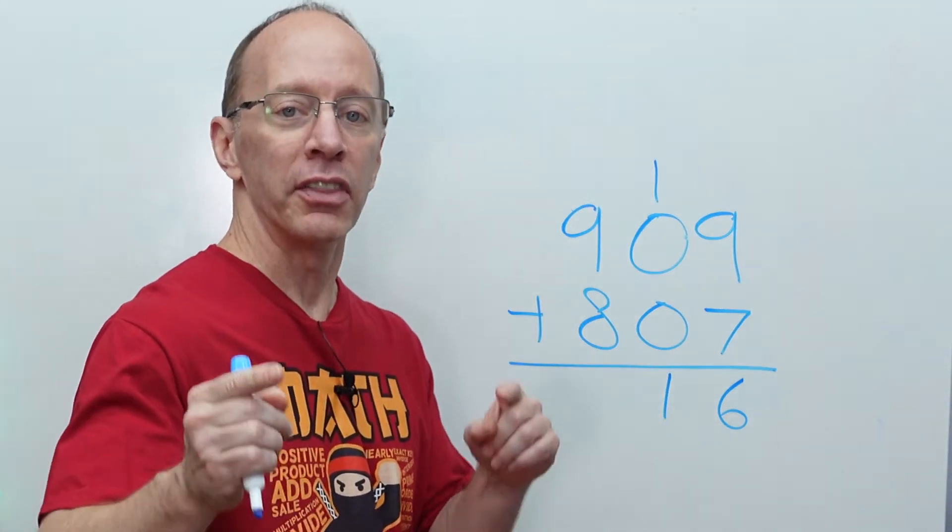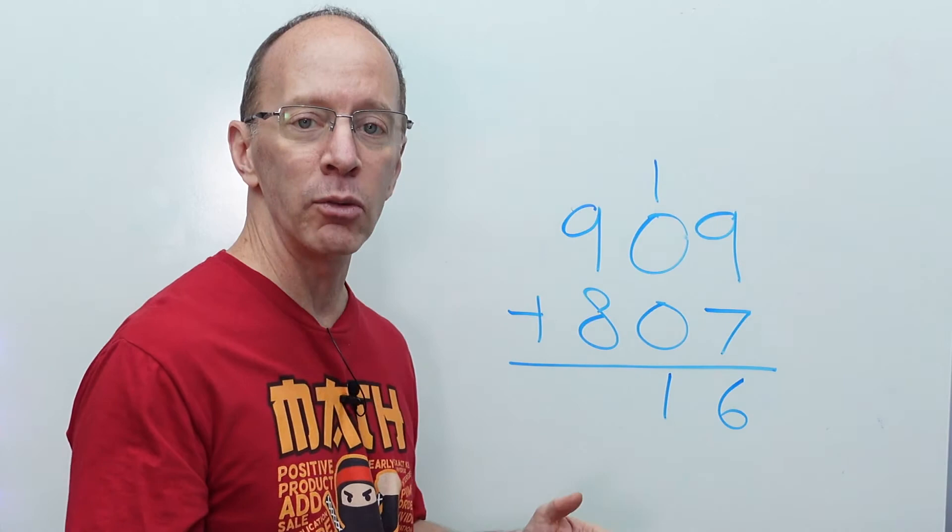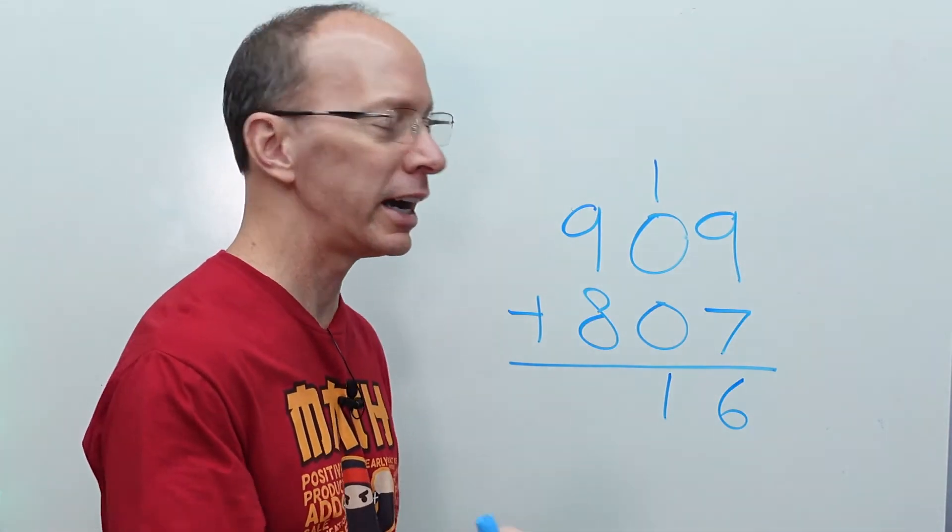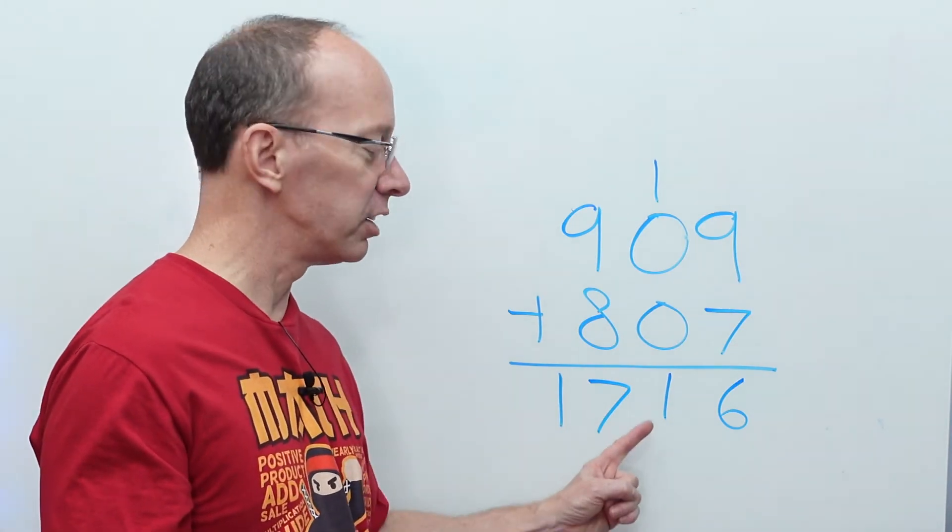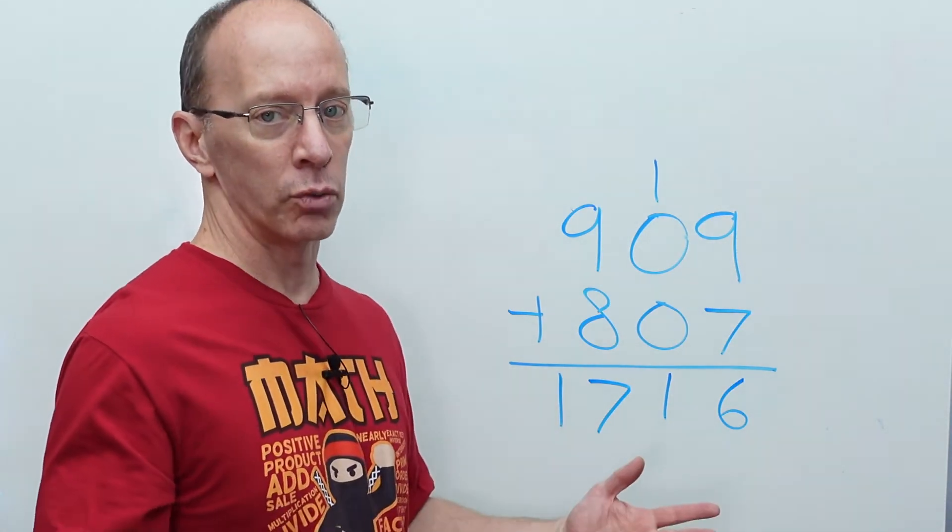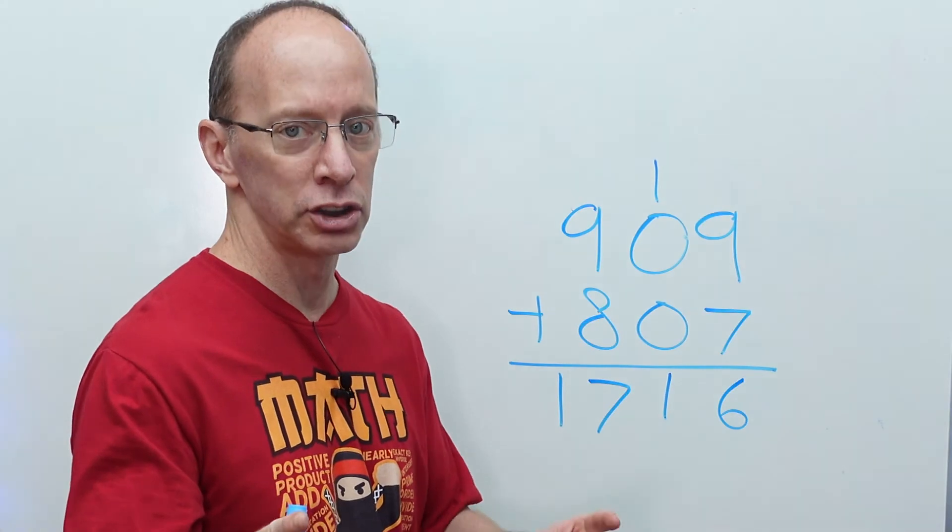Now we add the hundreds. 9 plus 8. What is it? You're right. 17. 1,716 is the answer. Ready to do another one? I know you are. Let's do it.